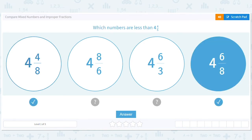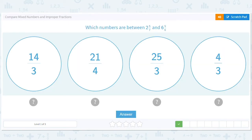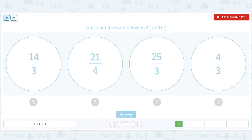Did I select this one? Yeah. Okay. Cool. Which numbers are between two-and-five-sevenths and six-and-five-sixths? Okay. So this number is between one and two, right? Four-thirds.